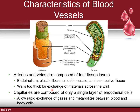Arteries and veins are both composed of four different tissue layers: the endothelium, elastic fibers, smooth muscle, and connective tissue. Because there are four different layers, it's too thick for any exchange of materials across the wall — that's why we have thinner-walled capillaries. Capillaries have only a single layer of endothelial cells, allowing them to rapidly exchange gases and metabolites — like oxygen and carbon dioxide — between blood and body cells.